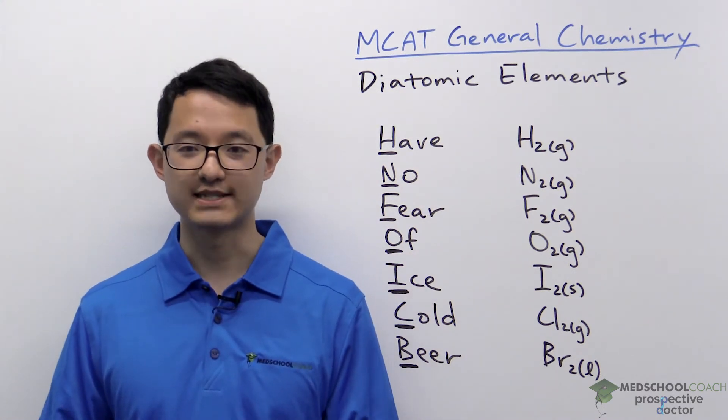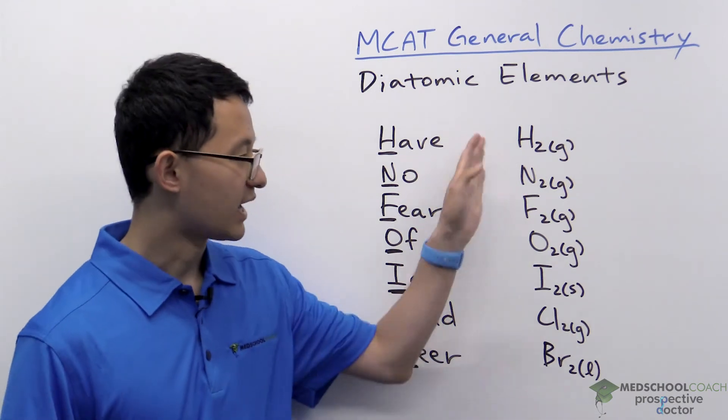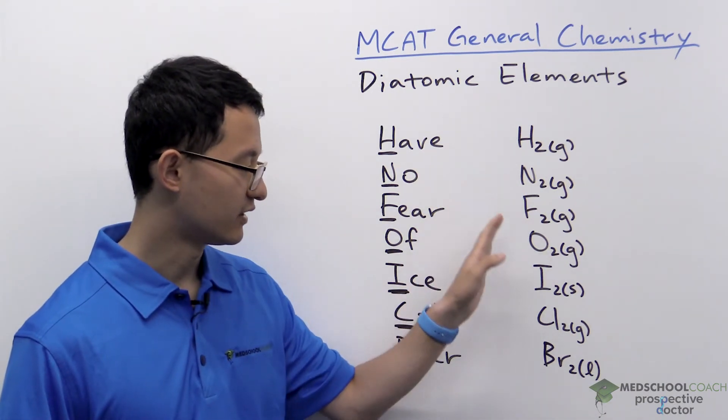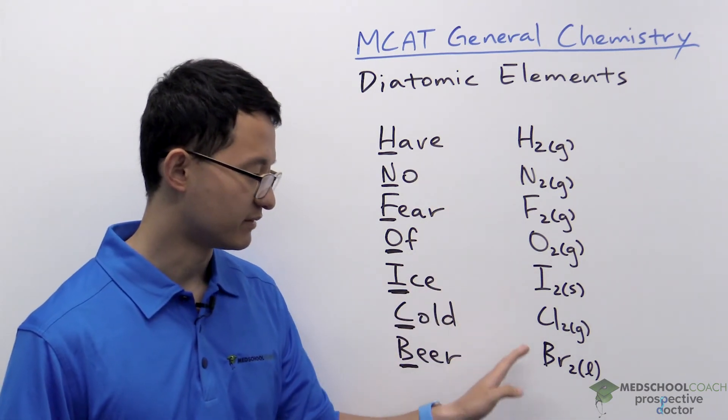So these are our seven diatomic elements: hydrogen, nitrogen, fluorine, oxygen, iodine, chlorine, and bromine.